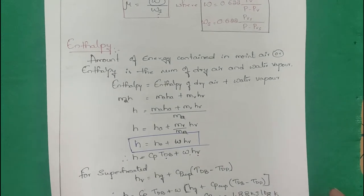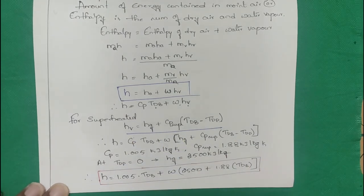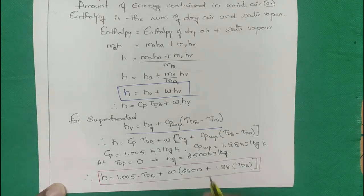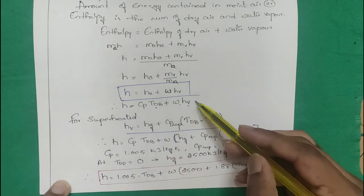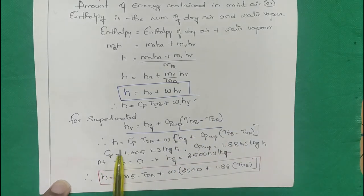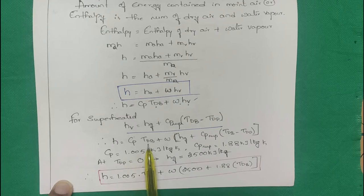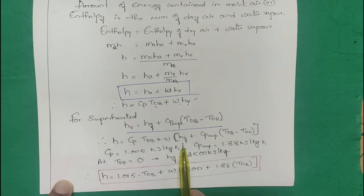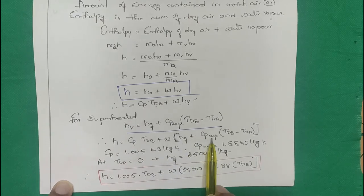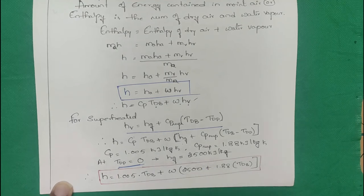For superheated vapor: hv = hg + Csuperheated × (Tdry_bulb − Tdew_point). If dew point is 0°C, hg = 2500 kJ/kg (standard value). With Cp_air = 1.005 and Csuperheated = 1.88, the final important formula is: h = 1.005 × Tdry_bulb + W × (2500 + 1.88 × Tdry_bulb).